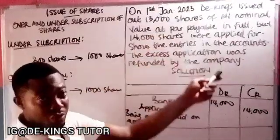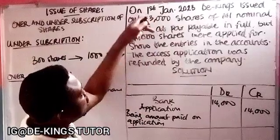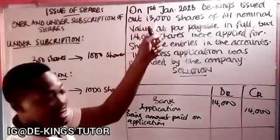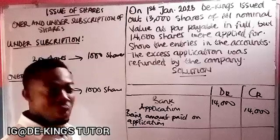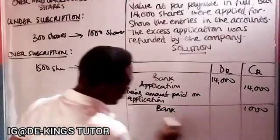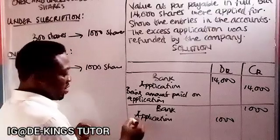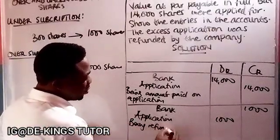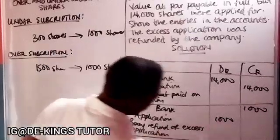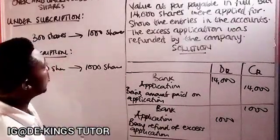Only 13,000 shares were actually issued, so there is an excess application of 1,000 shares. Since the excess application was refunded, the bank pays back 1,000 to the applicants. The bank is credited 1,000 and the application account is debited. Narration: being refund of excess application — 1,000.